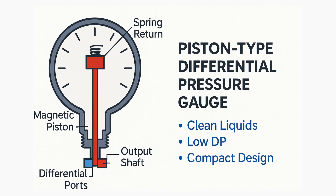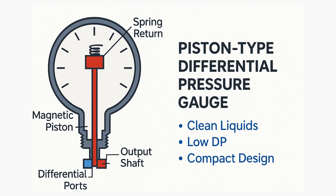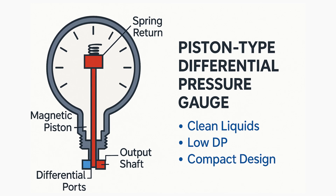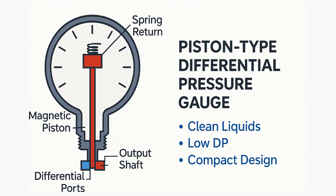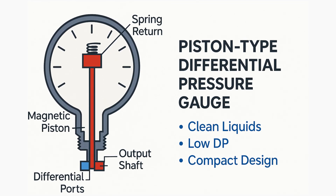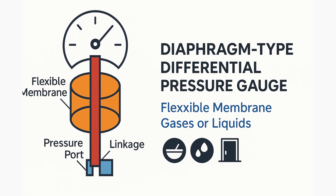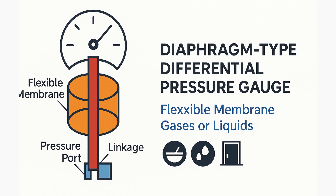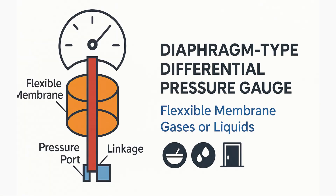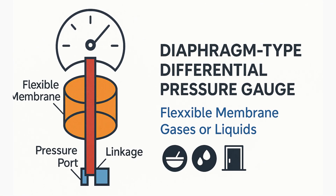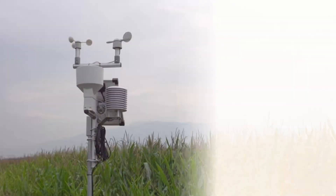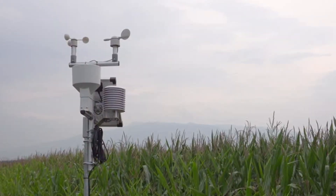Now let's cover some types of differential pressure gauges. The first is the piston type, which uses a magnetic piston mechanism and is ideal for clean liquids and low differential pressures. The second is the diaphragm type, which uses a metallic diaphragm, is suitable for gas and liquid applications, and is good for HVAC, pharma, and clean room uses.